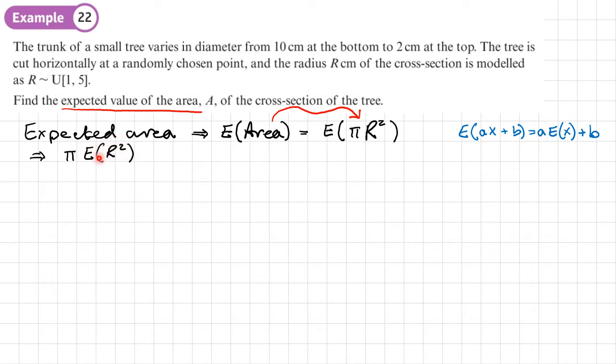Now, we need to think where we find E of R squared or E of X squared. We see it in the variance formula. So we know that the variance of R would be equal to E of R squared minus the mean squared. So that's E of R all squared. So what we're going to do is just rearrange it to make E of R squared the subject, because that's what we want to work out. And that'll be E of R squared is equal to the variance of R plus the mean squared.